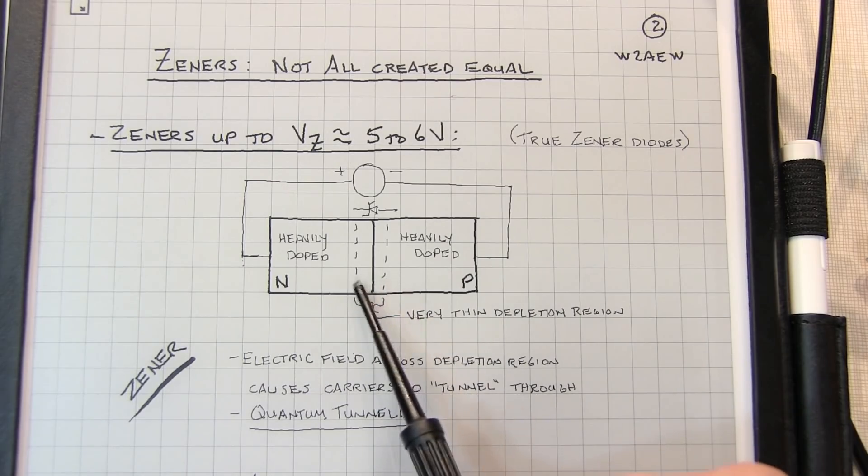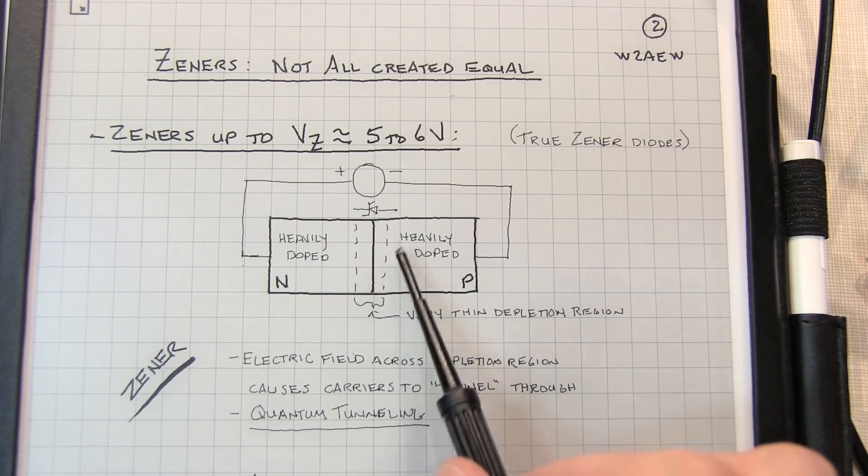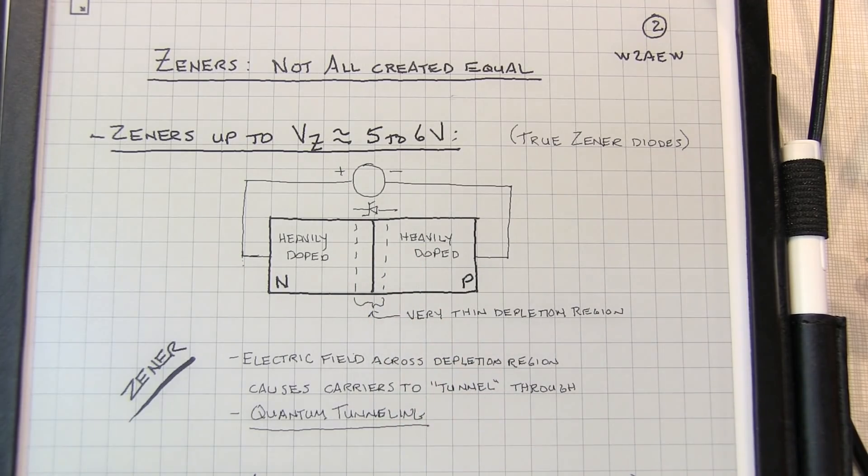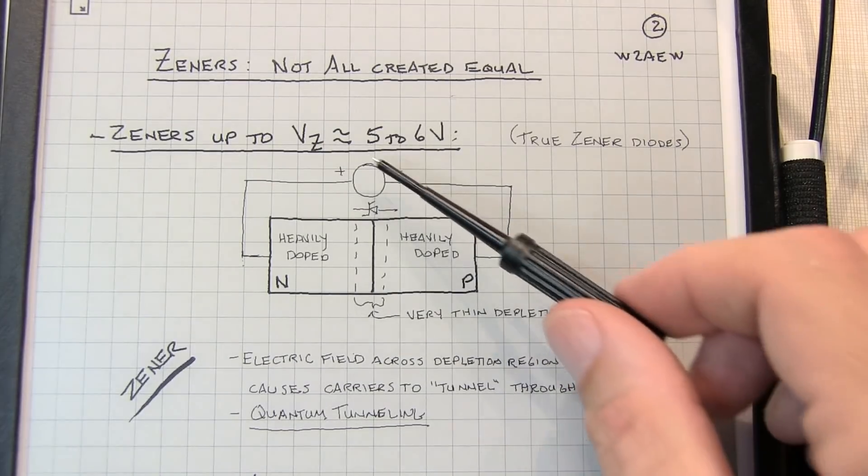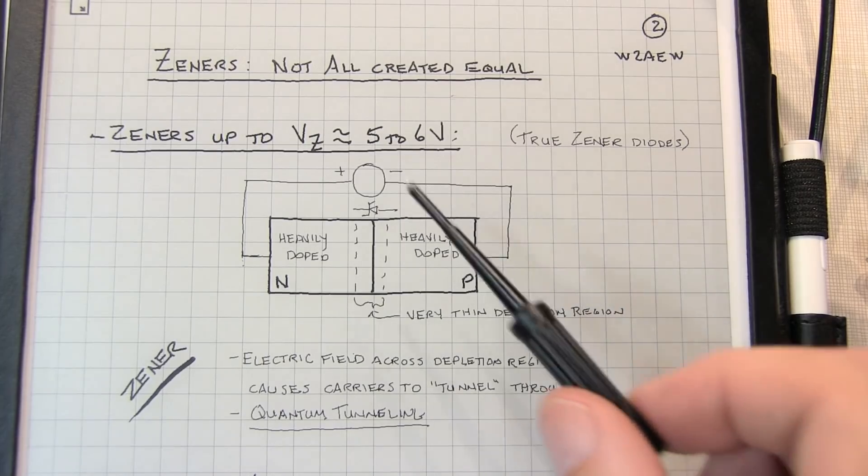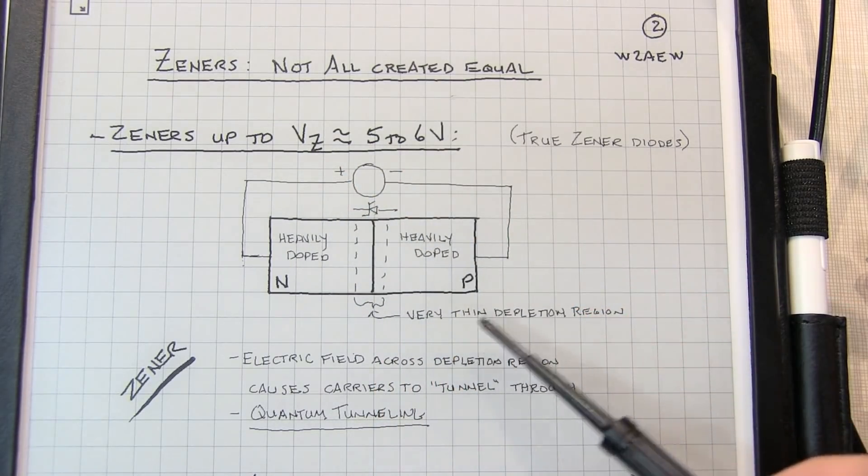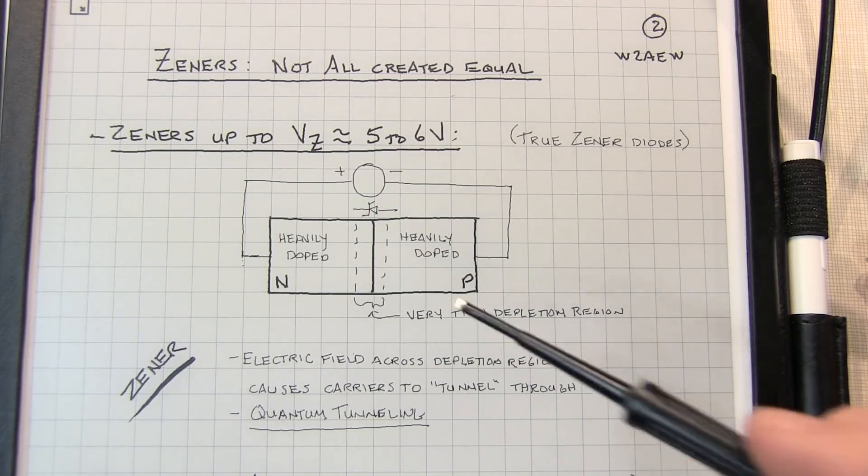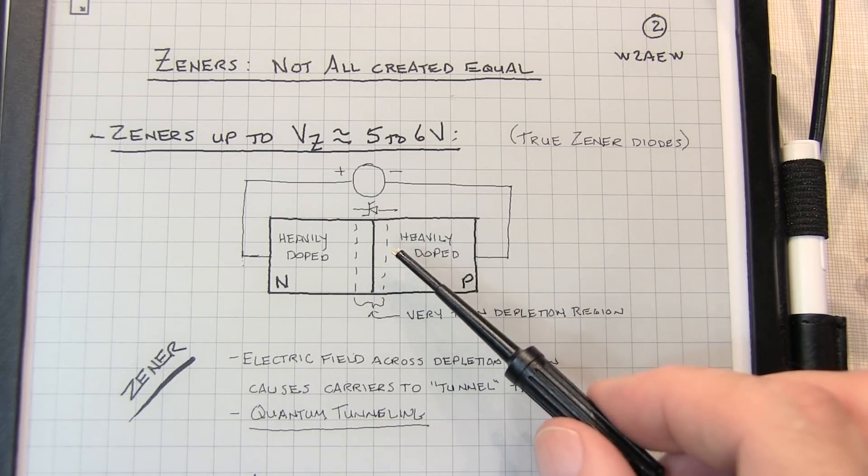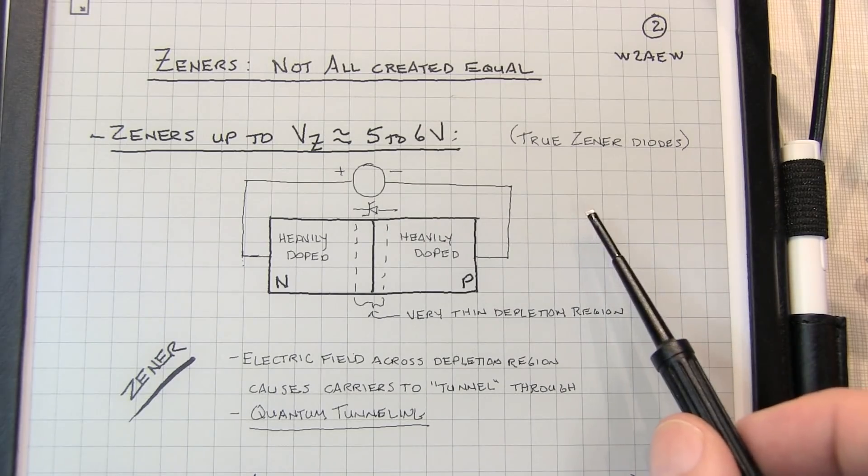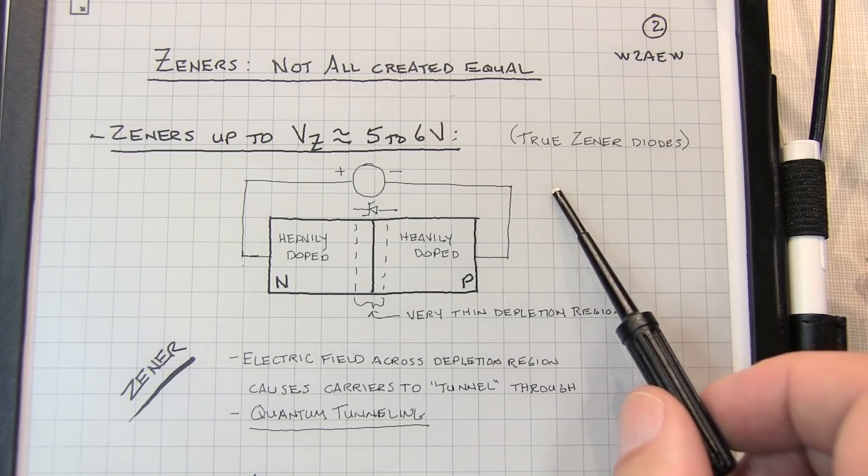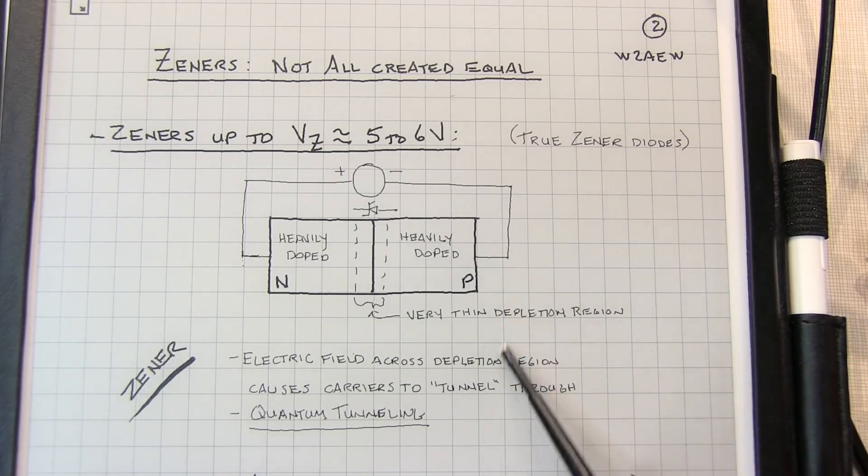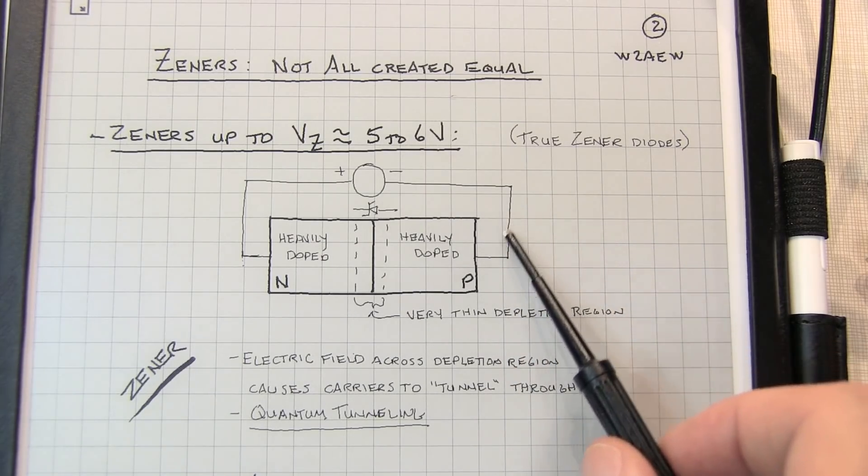Because the regions are very heavily doped, the depletion region is very thin. The electric field that appears across that is really strong. It's a large voltage potential over a very thin area. That electric field causes carriers to essentially tunnel through that depletion region in a mechanism called quantum tunneling. These are true Zener diodes. This is the Zener effect. Zener diodes that have Zener voltages up to about five or six volts work predominantly under this behavior. One downside is it's not a very sharp behavior. It's a very soft Zener turn-on characteristic, very characteristic of this Zener effect.